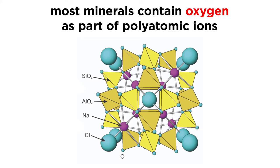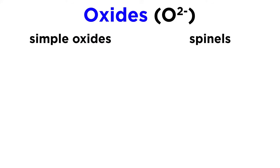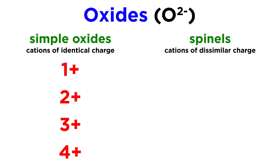Since most minerals contain oxygen, such as with silicates and carbonates, the oxide class is restricted to minerals where one or more type of cation is ionically bonded only to oxygen. Oxide minerals can be broken down into two groups, simple oxides, which only contain cations of identical charge, and the spinels, which contain cations of dissimilar charge. The simple oxides can be further grouped based on the charge of their cation, which is usually between 1 and 4.